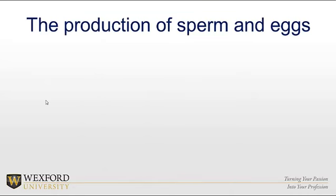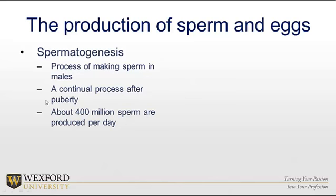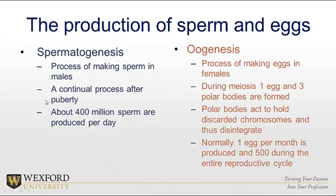Let's think more practically about meiosis and the production of sperm and egg. Spermatogenesis, by definition, is the process of making sperm in males, and it pretty much happens continually after puberty — about 400 million sperm are produced per day, so obviously there's quite a bit of meiosis going on. Oogenesis is the making of eggs in females. During meiosis one, one egg and three polar bodies are formed. Polar bodies hold discarded chromosomes and they disintegrate. Normally only one egg per month is produced — about 500 during an entire reproductive cycle — very different from sperm production.